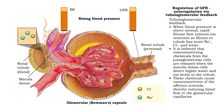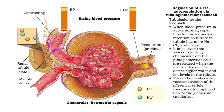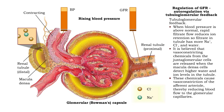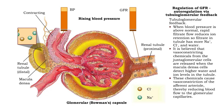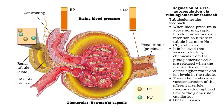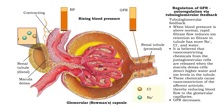These chemicals cause vasoconstriction of the afferent arteriole, thereby reducing blood flow to the glomerular capillaries. Glomerular filtration rate decreases.